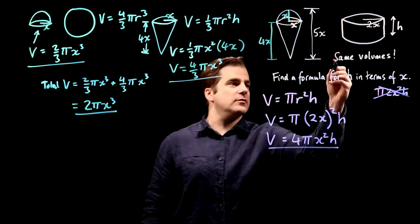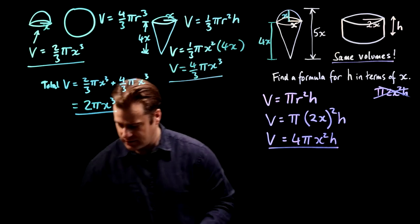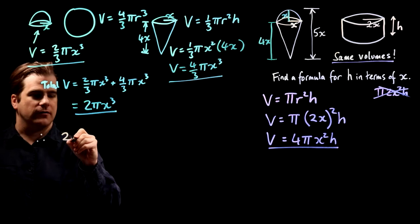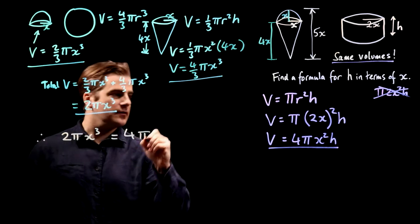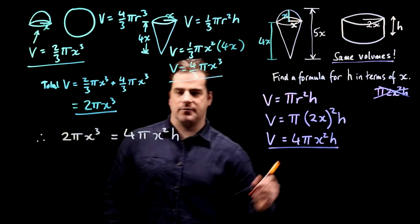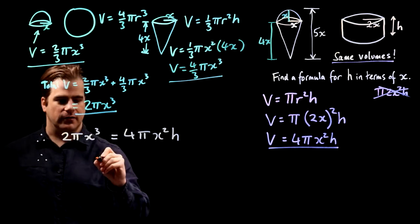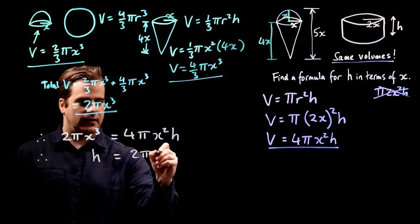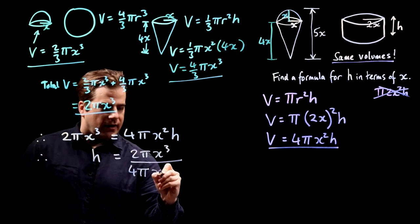We're told that these have the same volume. So therefore, that equals that. So let's put them equal to each other. So therefore, 2 π x³ is equal to 4 π x² h. And we want h in terms of x, which means get h by itself. So therefore, h is equal to 2 π x³ divided by 4 π x².